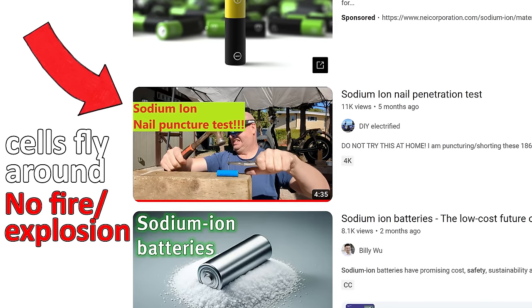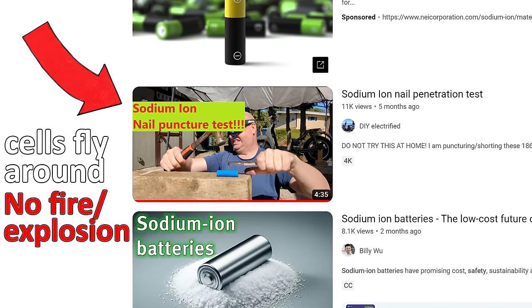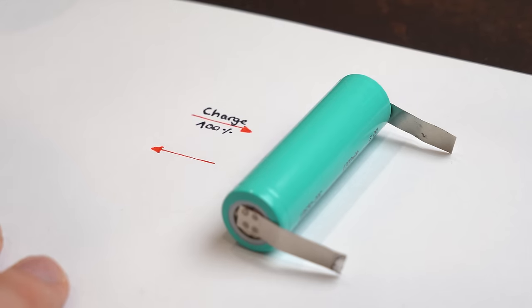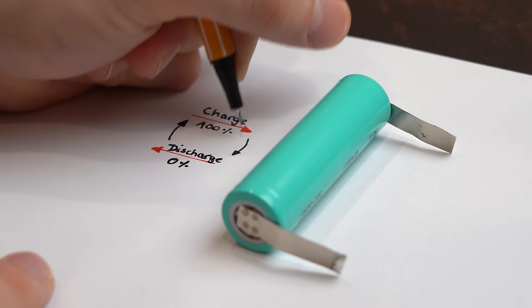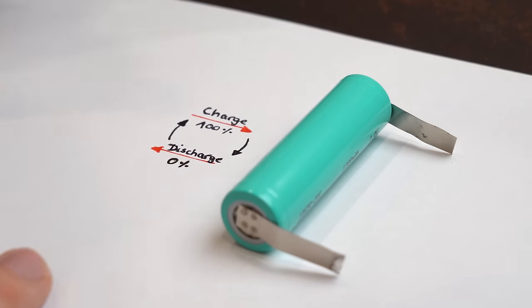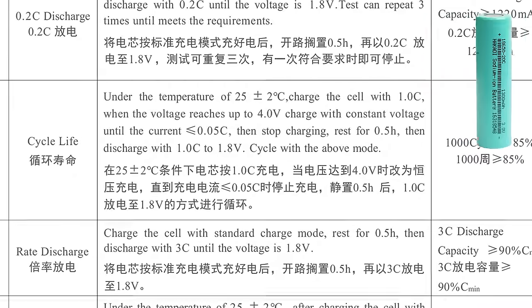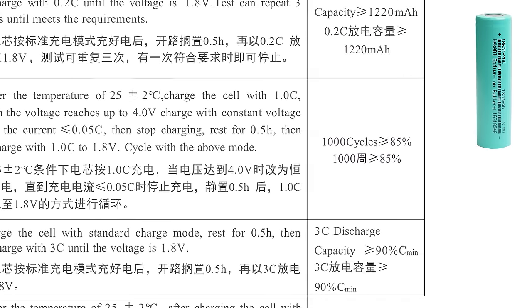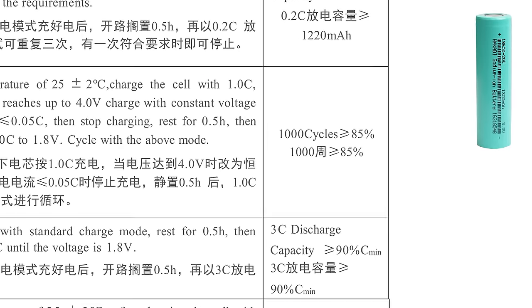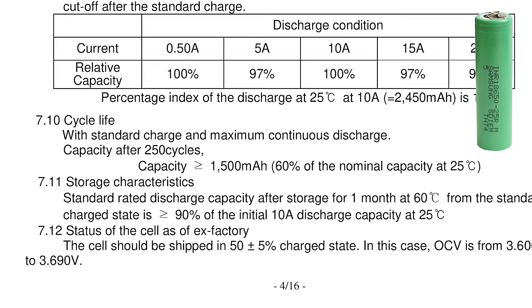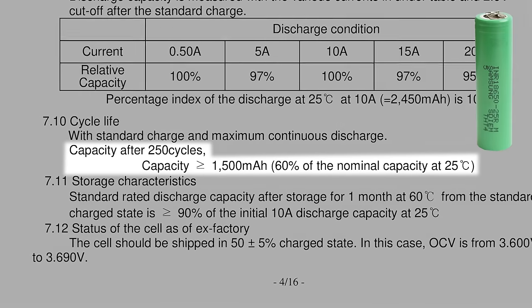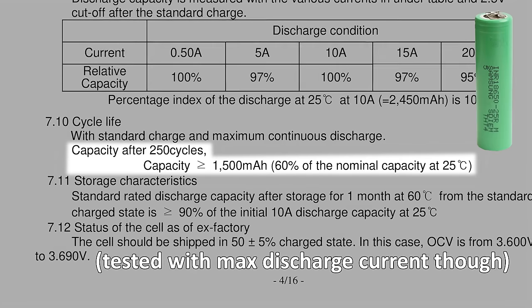And last but not least we got the topic of cycle life meaning how often I can discharge and charge up the battery before it is losing capacity. And according to the datasheet the sodium battery does 1000 cycles while maintaining 85% of its capacity. while the lithium battery only comes with 60% after 250 cycles which is a huge difference.